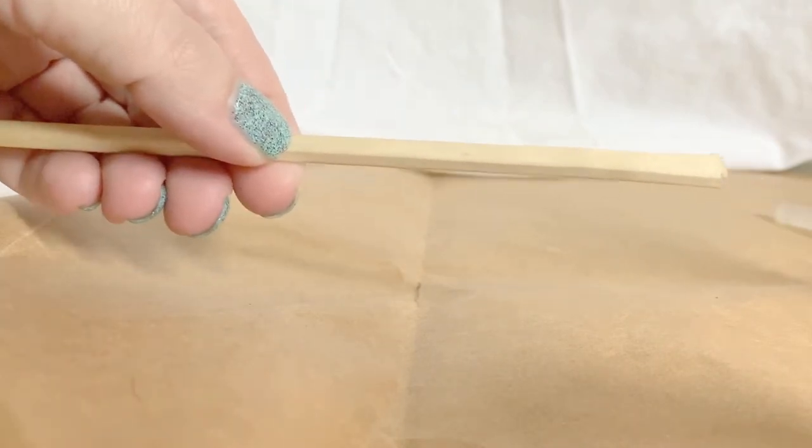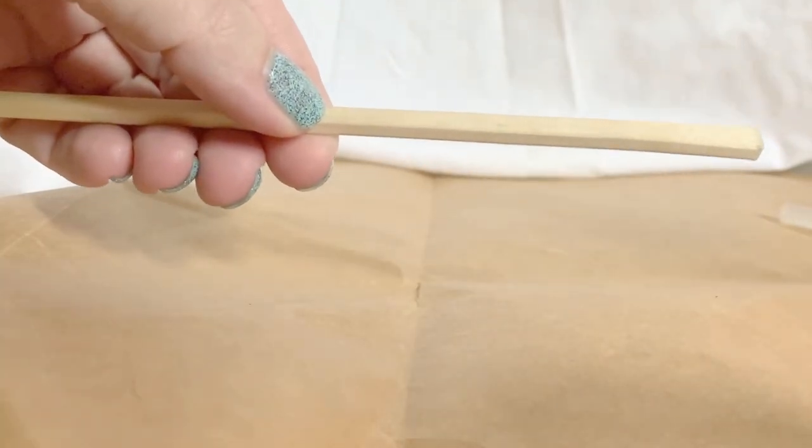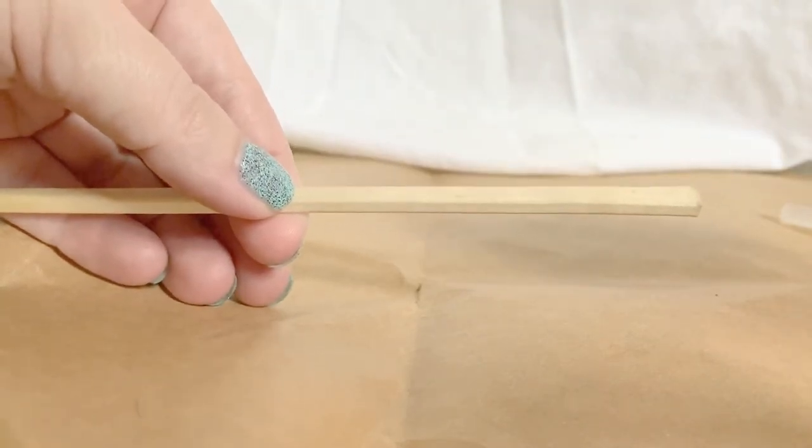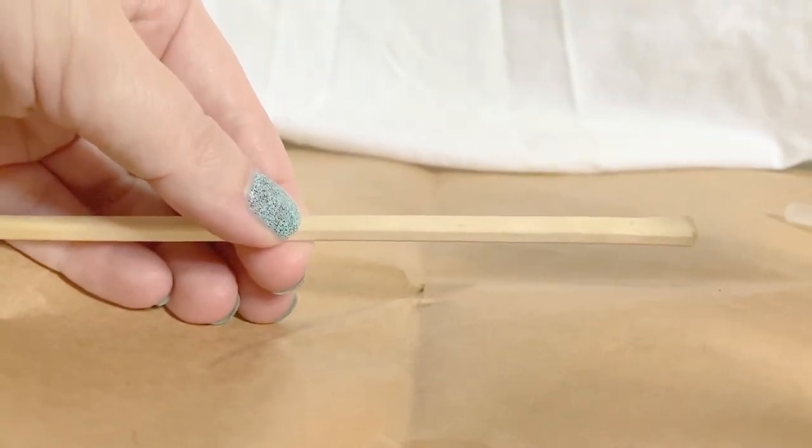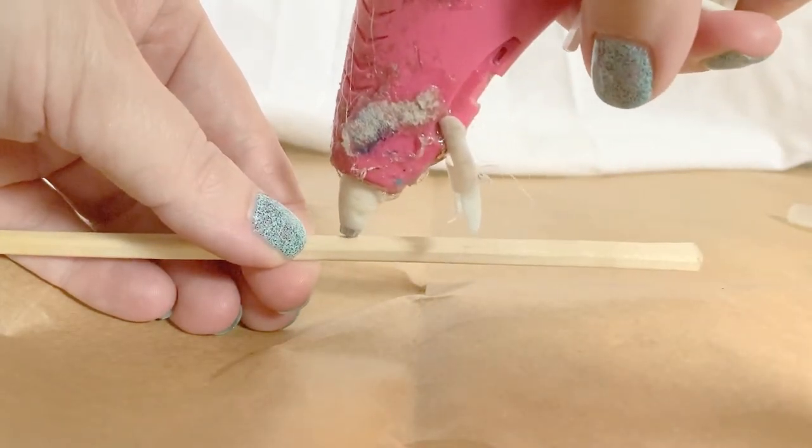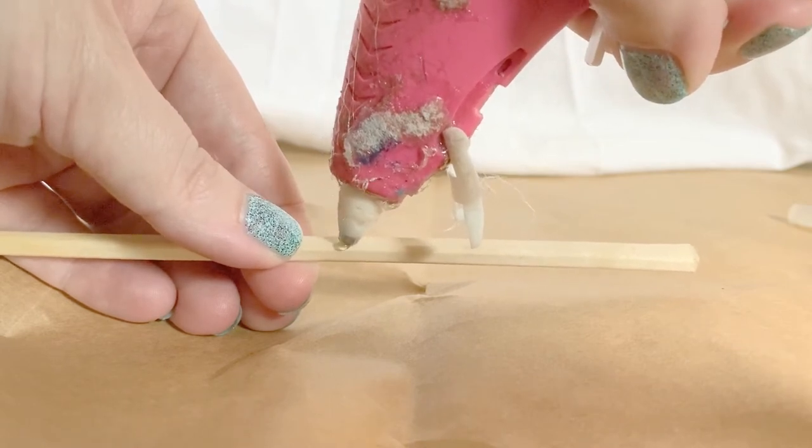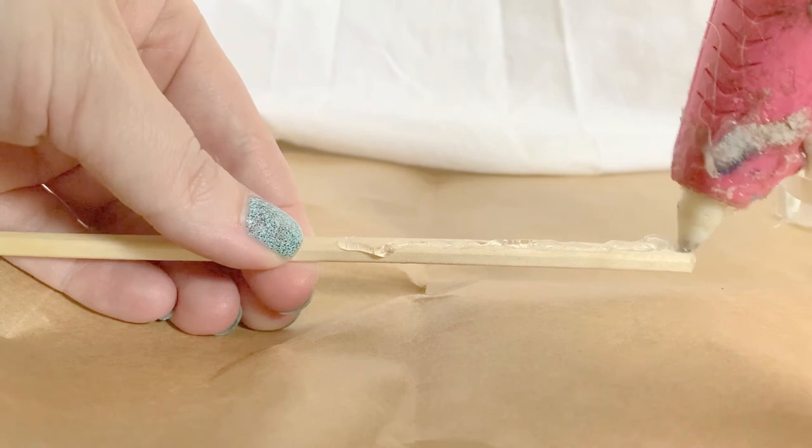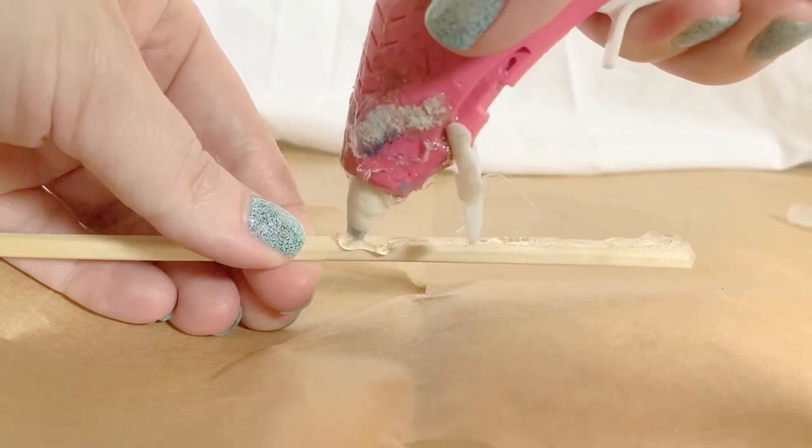Now to make the handle we are just going to take our hot glue and coat our handle. Now we're going to go over it a whole bunch of times to get it good and thick for our handle. Again just make sure you're being patient and taking your time you're probably going to use a whole bunch of hot glue for this process.